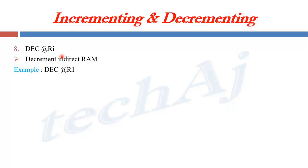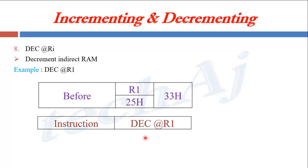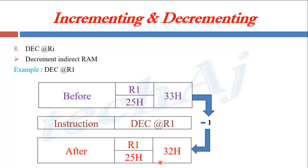DEC @Ri will decrement the value present at the memory pointed to by the indirect register pointer @Ri. Suppose R1 holds the address 25H and at address 25H we have the value 33H. When we execute DEC @R1, the value at the address pointed to by R1 gets decremented. Since R1 points to 25H, which holds 33H, this 33H will be decremented by 1 to give the new value 32H at address 25H.